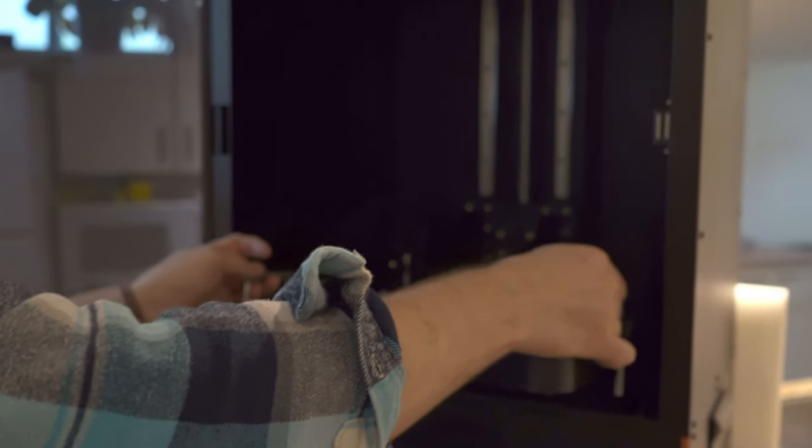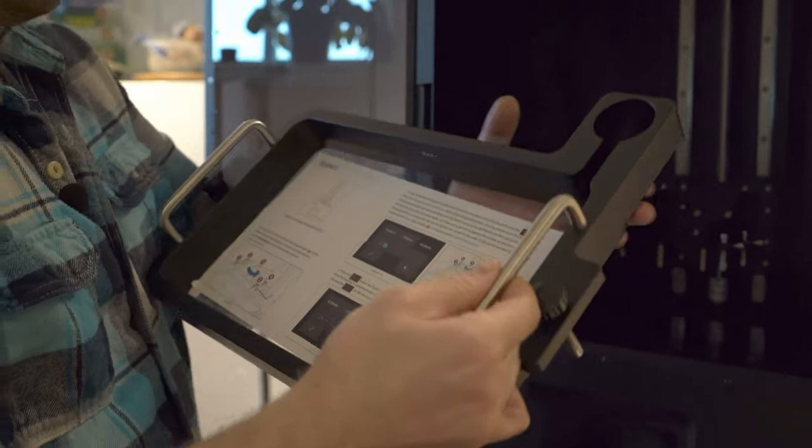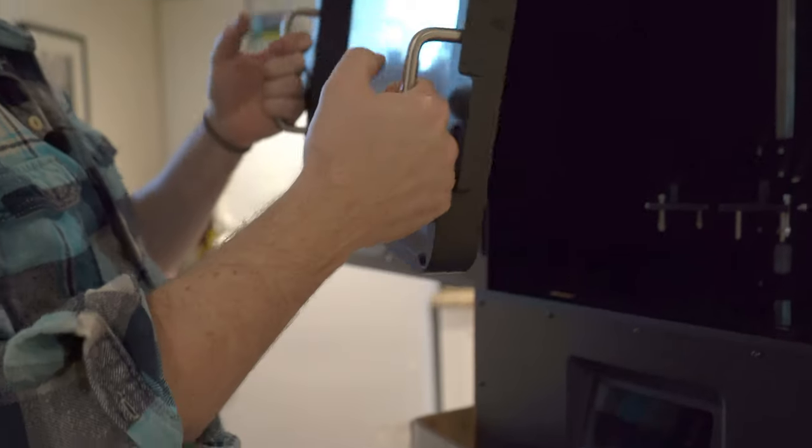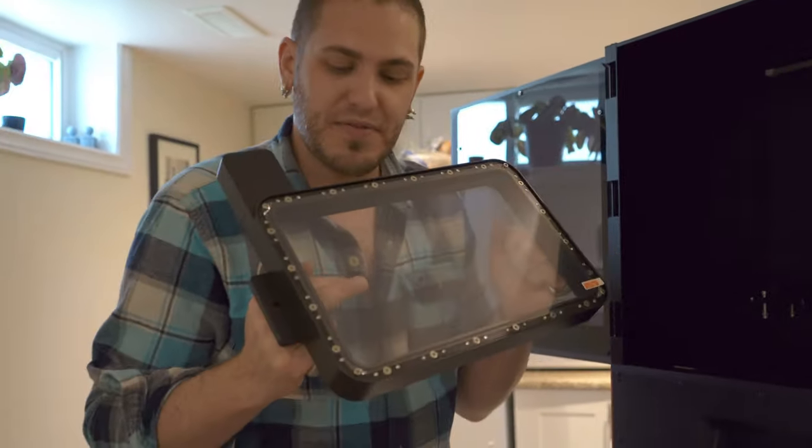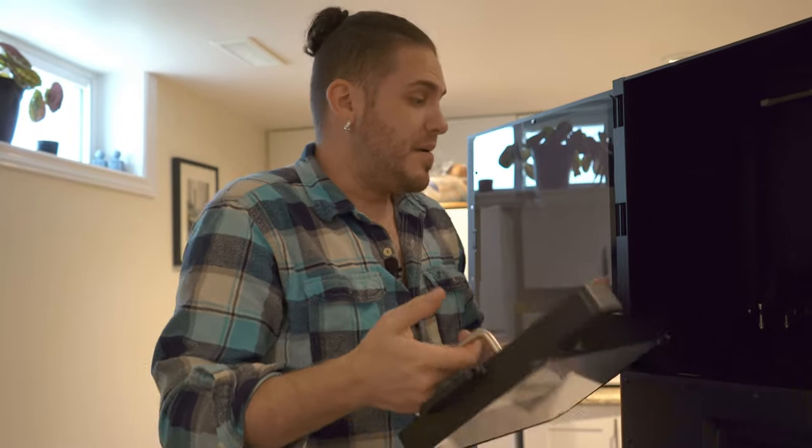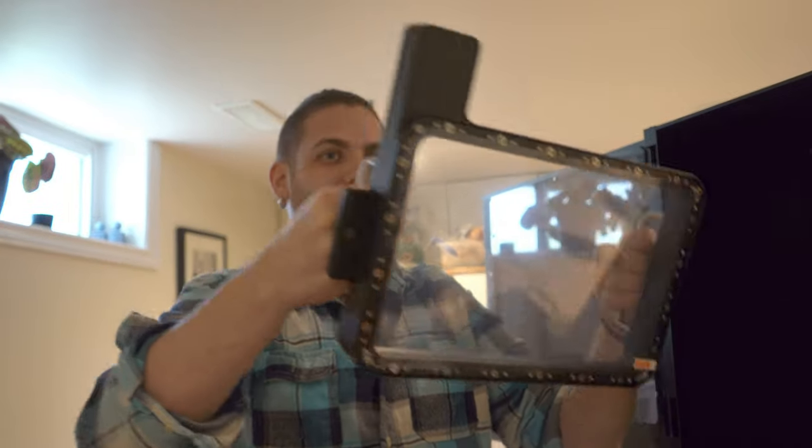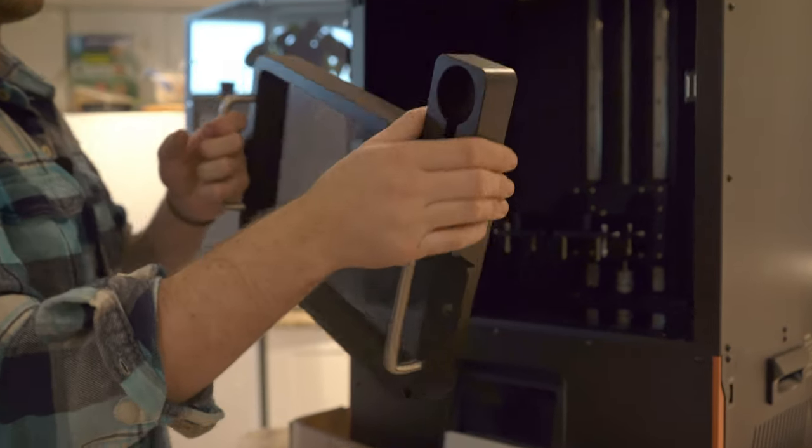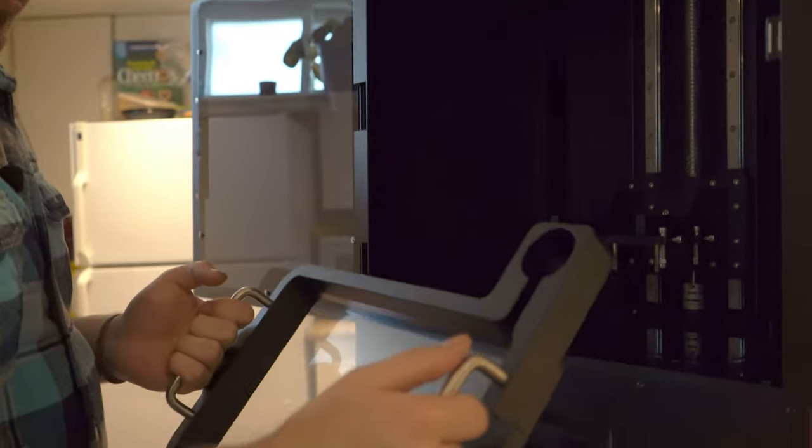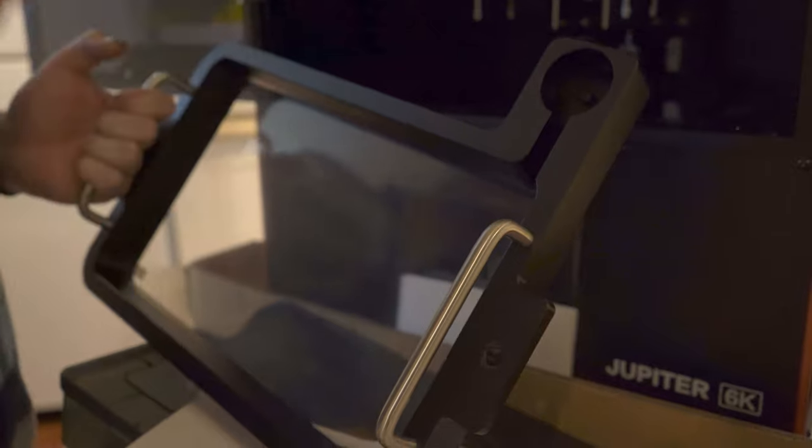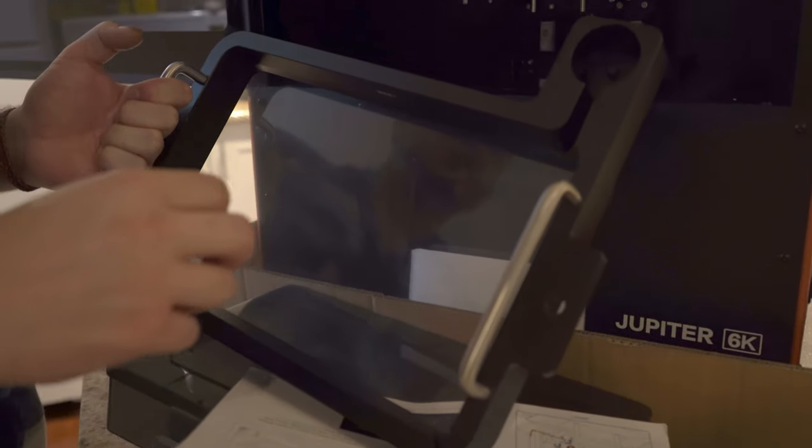Now, one of my big concerns with this monstrous vat is the weight, and when it's full of resin, can this thin film support that, or is it going to sag, or how is it going to happen, I don't know. But that is seriously huge. And thankfully, I saw a couple of people early on when they received their units, I think it was in Europe or something, they had a different style of tank than was pictured on the Kickstarter.